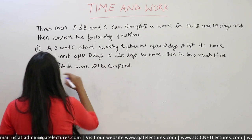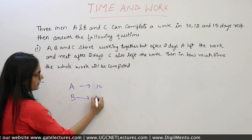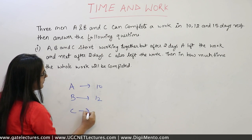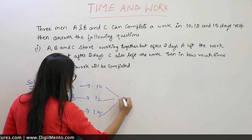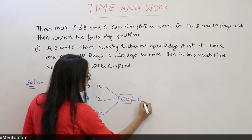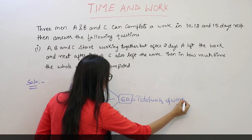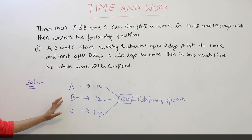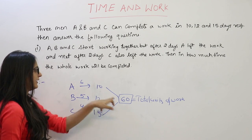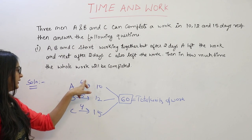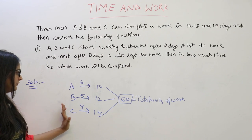Now come towards the solution. A can complete a work in 10 days, B can complete the same work in 12 days, C can complete the same work in 15 days. Take the LCM, that must be equal to 60. This 60 will represent the total unit of work. Now we will find the 1-day efficiency of A, B and C, that is 6, 5 and 4 respectively. Divide 60 by 10 to get the 1-day efficiency of A; similarly find the efficiency of B and C.